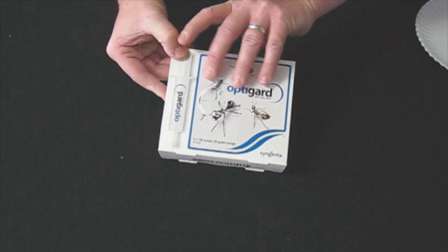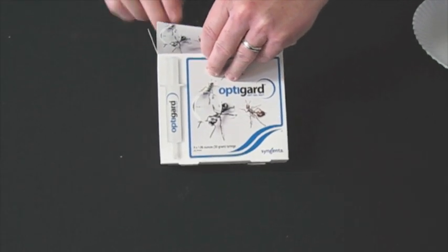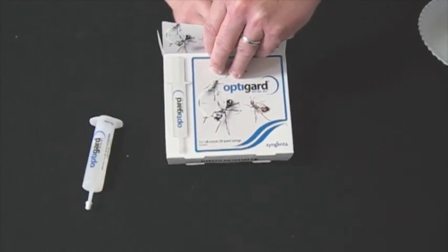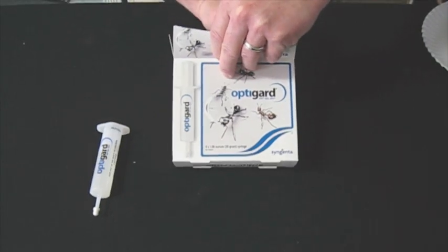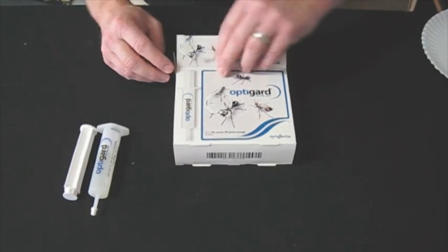When you receive your product, it will come in a one or a four count pack. You will receive a tube of gel as well as a plunger.